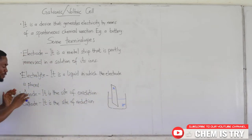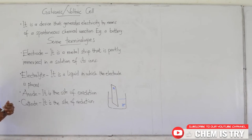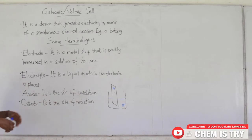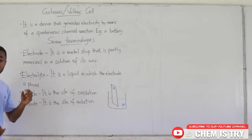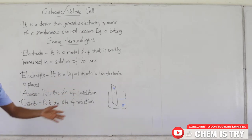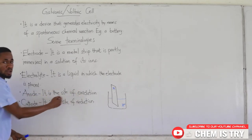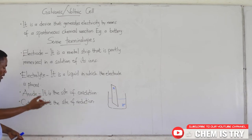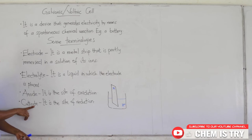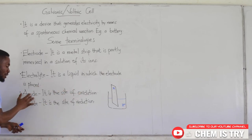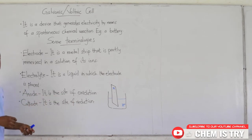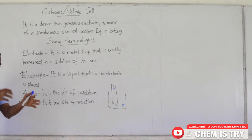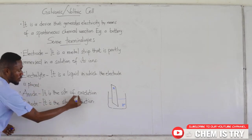Now, the next thing we learn is anode — it's a new term. It is the site of oxidation. In a galvanic cell, a redox reaction occurs, and in a redox reaction we have reduction and oxidation occurring at the same time. Where the oxidation is going to occur, we give it the name anode. Where the reduction will occur, we call that part the cathode. So: oxidation at the anode, reduction at the cathode.